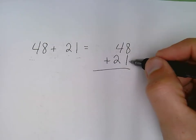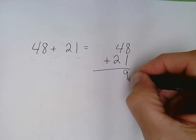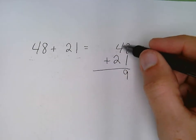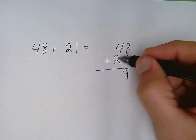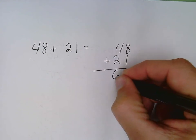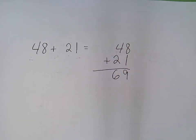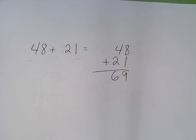Eight plus one is nine, and then I move over to the tens column. Four plus two is six, so my answer to 48 plus 21 is 69.